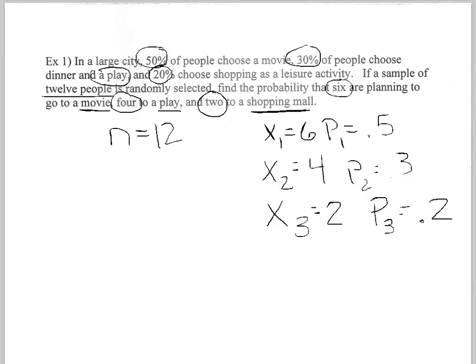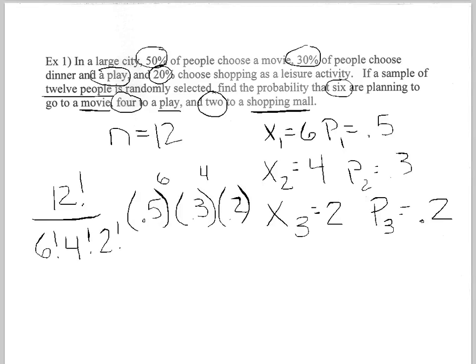So now we're going to go to our formula which we just had. So the formula says take your n, and on the bottom take all of your X's. Take your probability of X1, 0.5, to the number that you want, you want six people. The probability of the second one which is the play, and you want four people. The probability of the third thing, and you want two people.